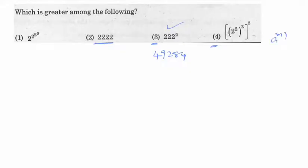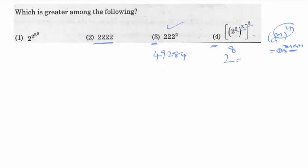The fourth one uses the rule: a power m, whole power n, equals a power m into n. So powers multiply. We get 2 power 2 into 4, which is 2 power 8. We all know that 2 power 8 equals 256.